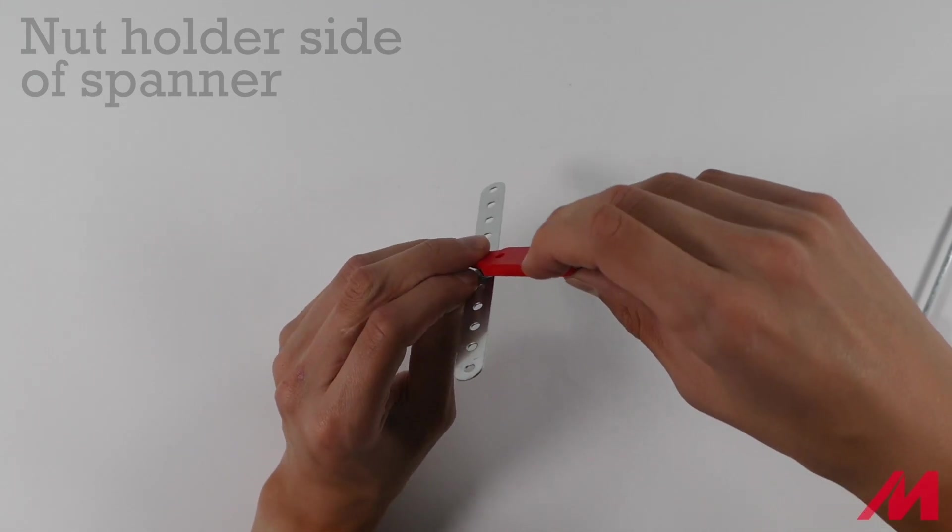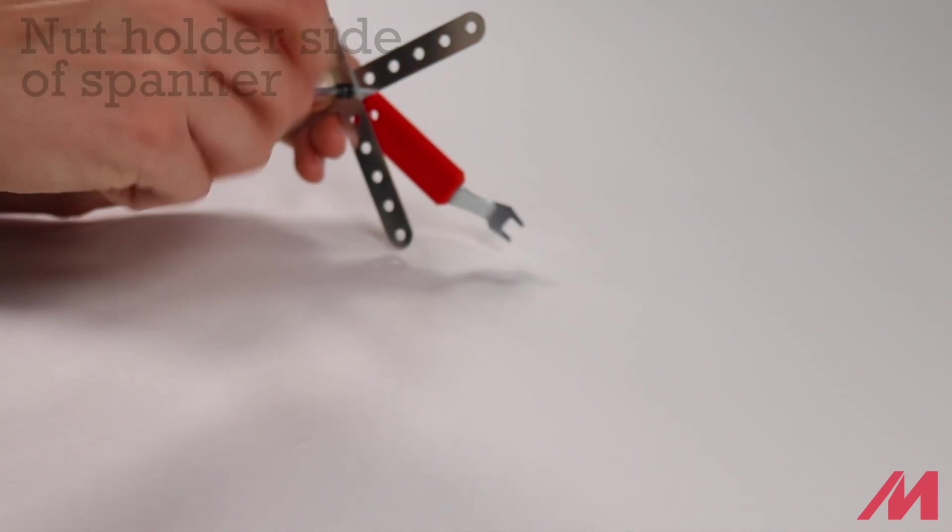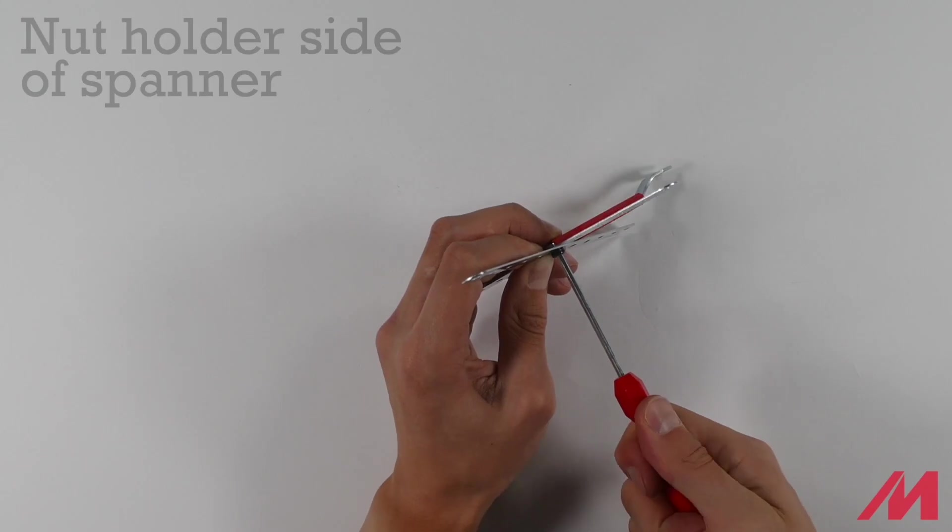We're going to hold that over the end of the screw and turn to the right. And we can apply as much tension as we like without any trouble whatsoever.